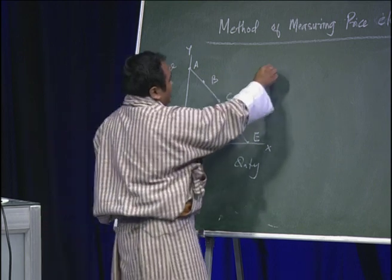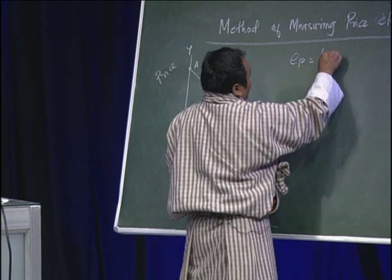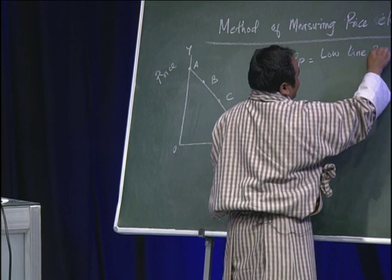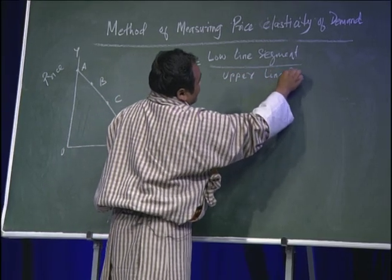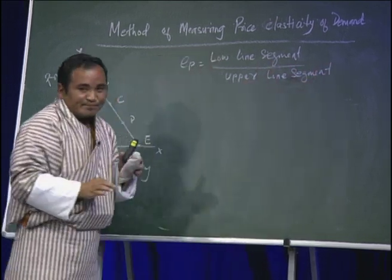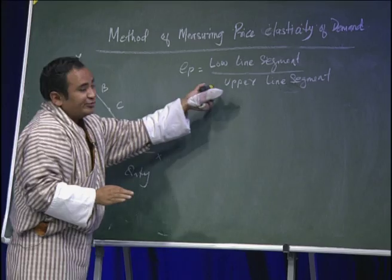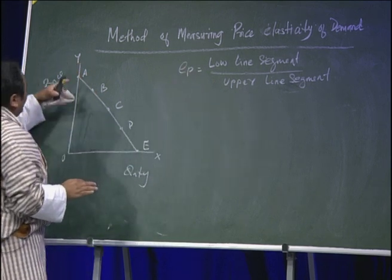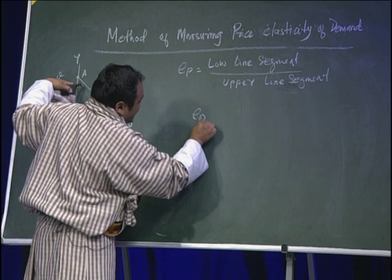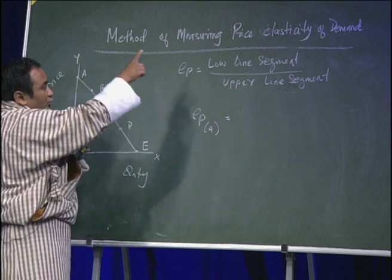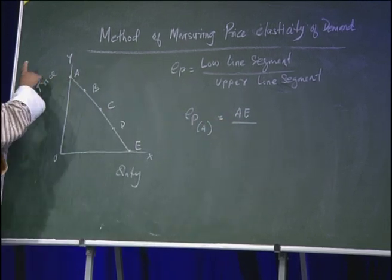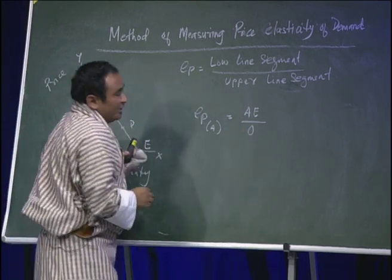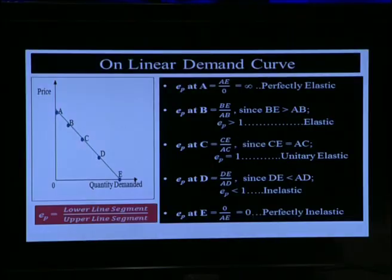If you are to calculate using the point method, the formula to keep in mind is: EP = lower line segment divided by upper line segment. Let us calculate price elasticity of demand at point A. EP at point A equals lower line segment AE divided by the segment above A, which has no line — that means it is 0. Any number divided by 0 gives infinity.